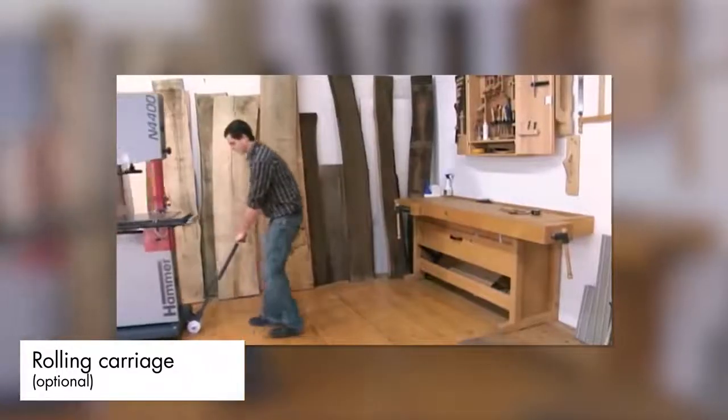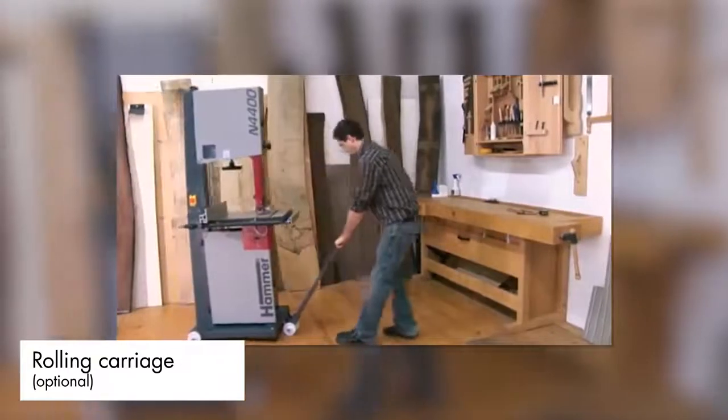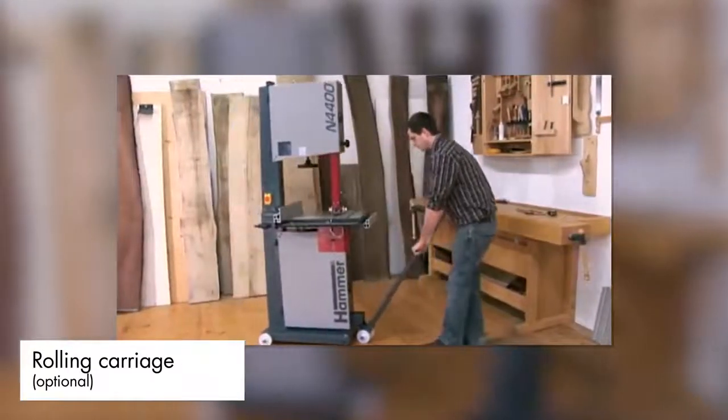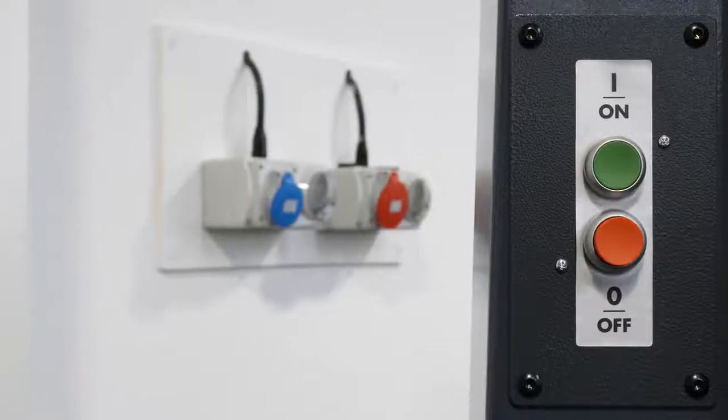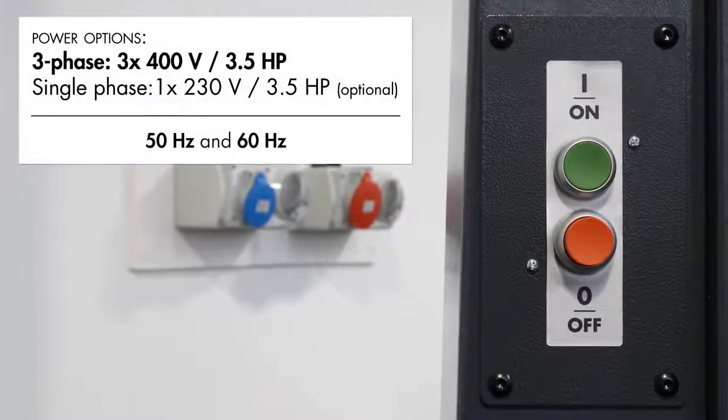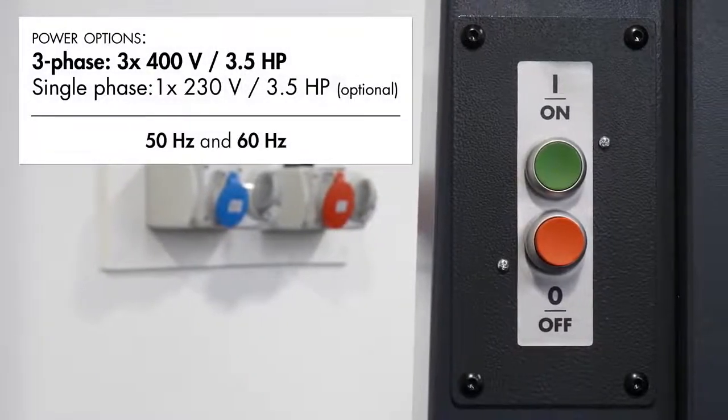As with all Hammer machines, the N4400 can be fitted with a rolling carriage for enhanced manoeuvrability and is available with both single-phase and three-phase power options with the latter fitted as standard.